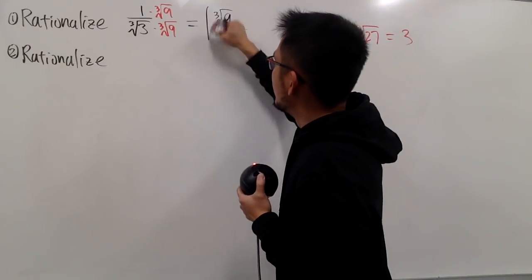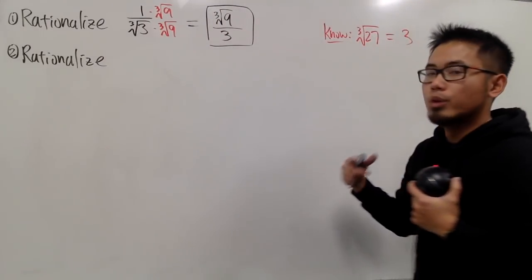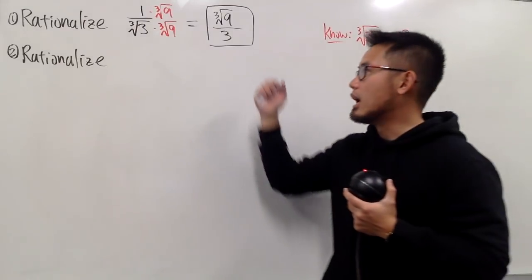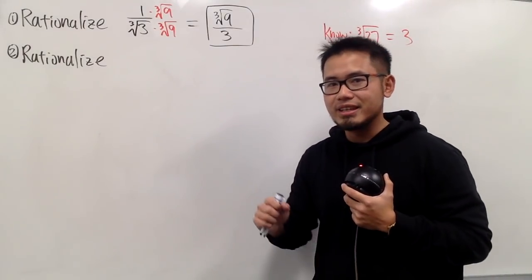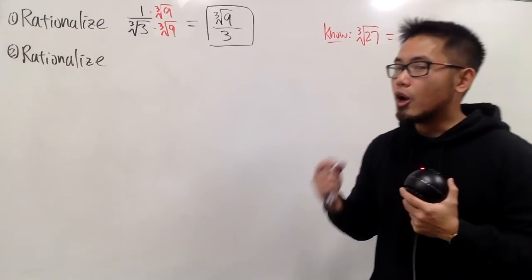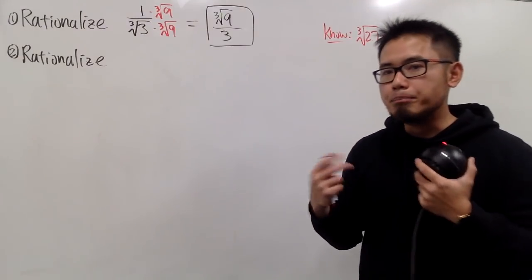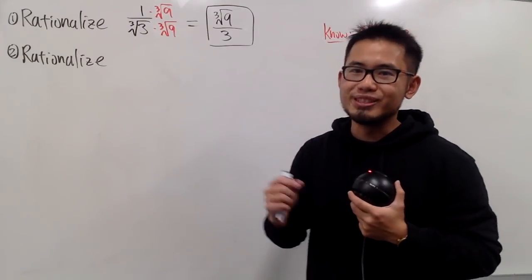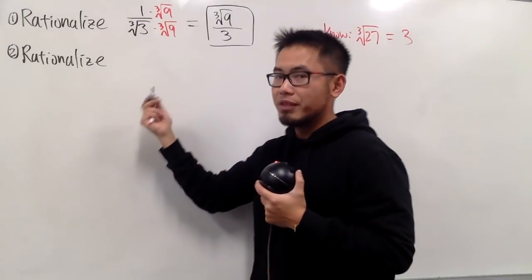And you see, we are done. We don't have any more radical, we don't have any more irrational numbers on the denominator. So this is it. And now, have we thought about what if we have two terms, and both of them are cube roots. So let's take a look at this example.